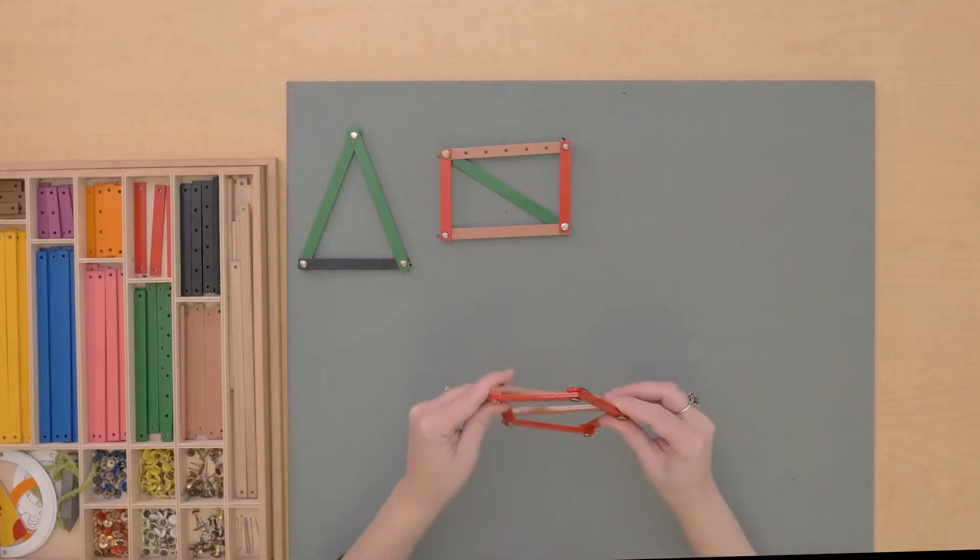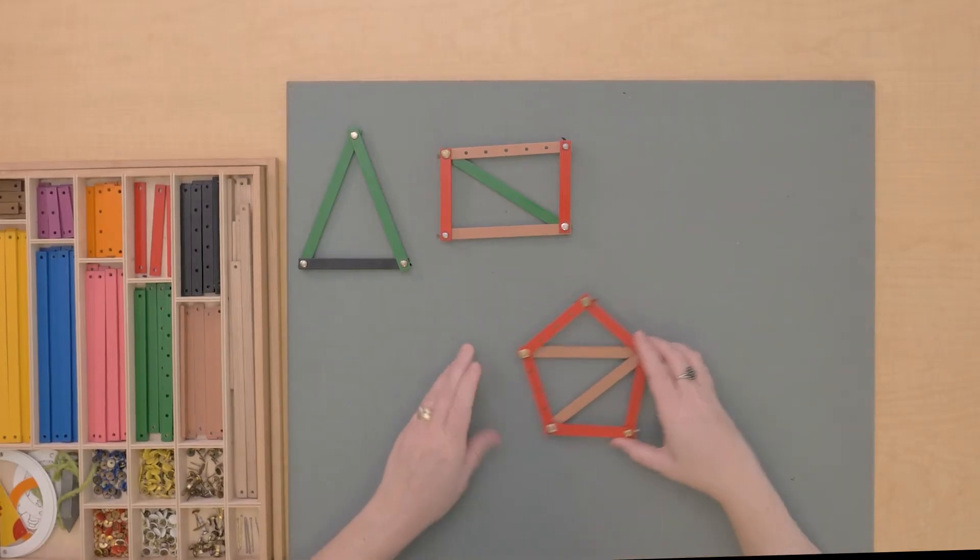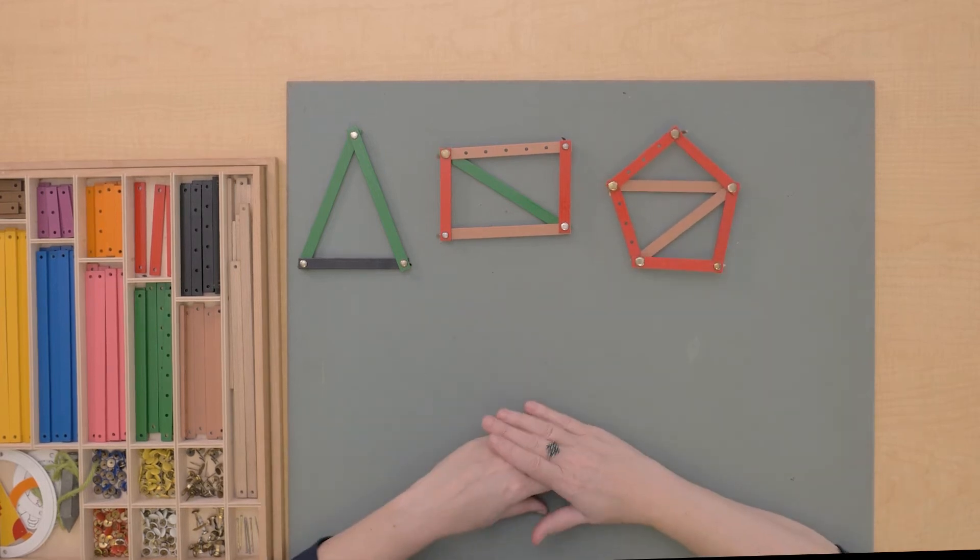Have you noticed something in our polygons? What happened when we put diagonals in? What shapes do you see? So the triangle is a triangle.